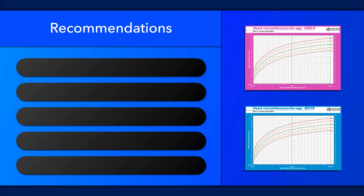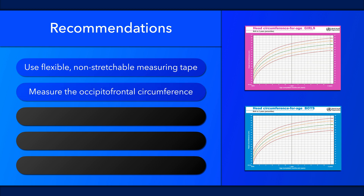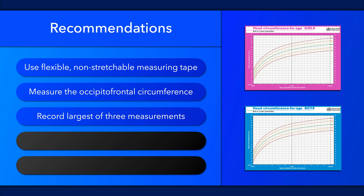Usage of correct technique is paramount when measuring head circumference in infants. Measure head circumference with a flexible, but non-stretchable, measuring tape. Measure the maximum occipital frontal circumference — that is, from the supraorbital ridge frontally to the external occipital protuberance posteriorly. Repeat the measurement three times and record the largest value.